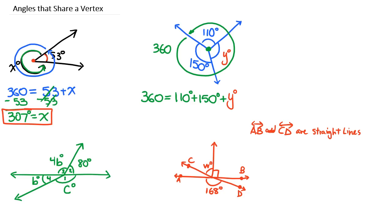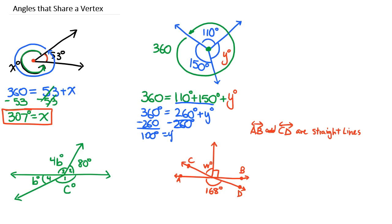Now we need to solve. Let's start by adding 110 plus 150, which is 260 degrees. We are looking for a number that when we add it to 260 we get 360. We could subtract 260 from both sides and we get y = 100 degrees. Check to make sure it's logical — if we came out this way that would be 90 degrees, so 100 degrees seems logical.